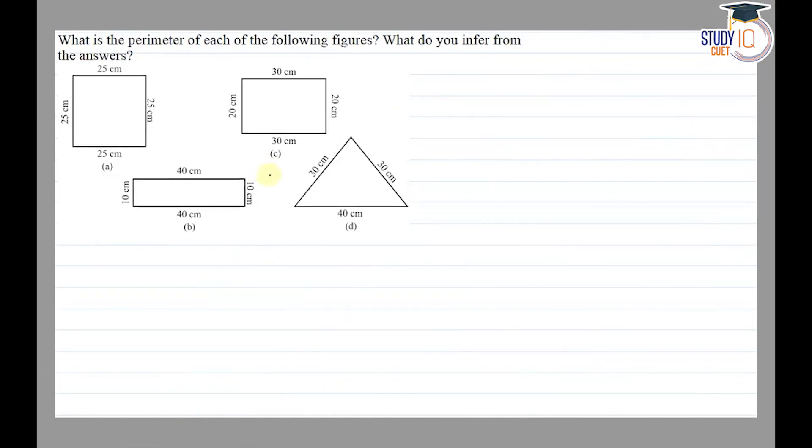Hello everyone, this question appears in Class 6 NCERT chapter of Mensuration. This is the 16th question of Exercise 10.1. The question asks: what is the perimeter of each of the following figures? What do you infer from the answer?